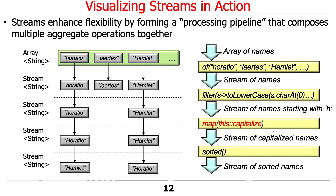The next step is we take the output of that stream and pipe it into `map`, and we're going to call the `capitalize` behavior at this point. That will then produce a stream of capitalized names — you can see Horatio and Hamlet. Then the next step is `sorted`, which is going to put them in lexicographic order. They've been consistently uppercased at that point, and the result will be a stream of sorted names.